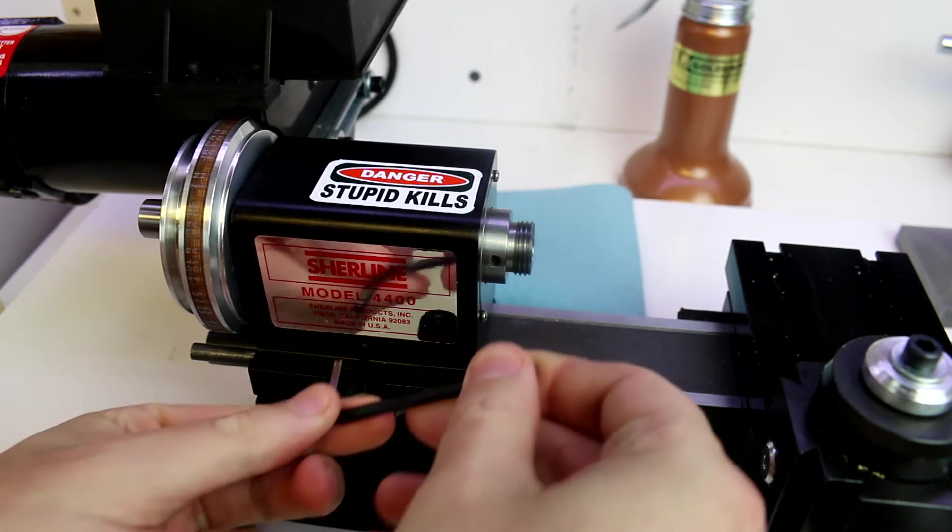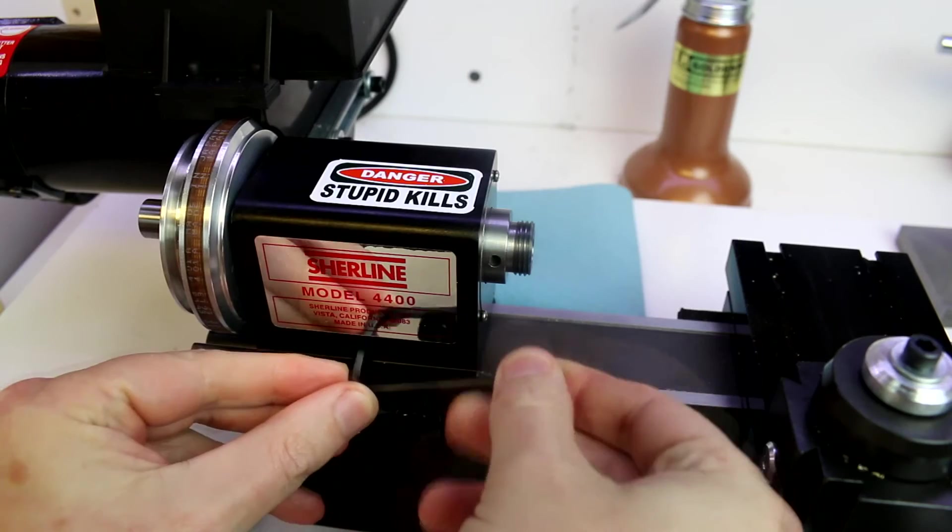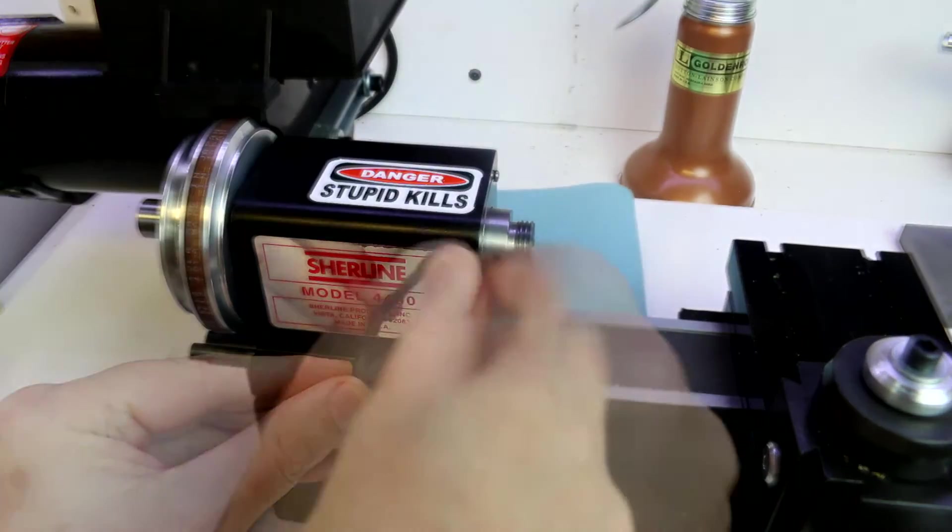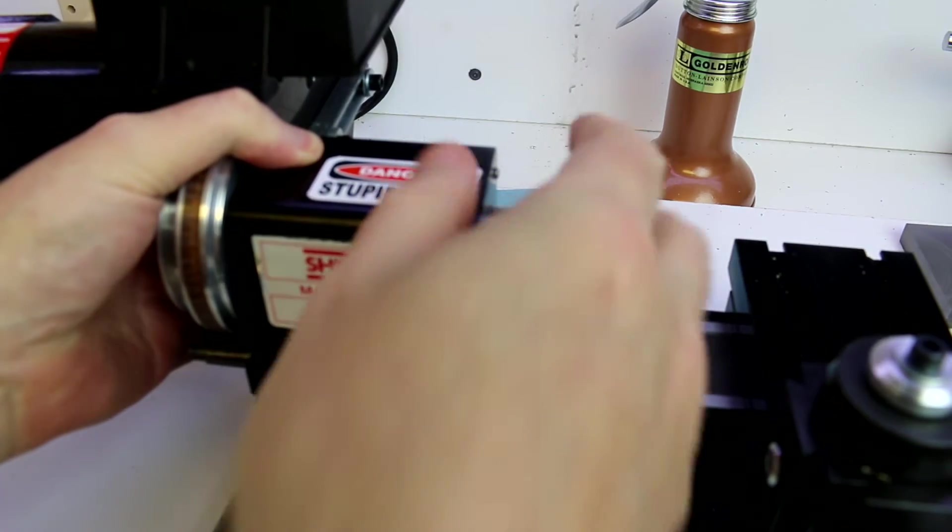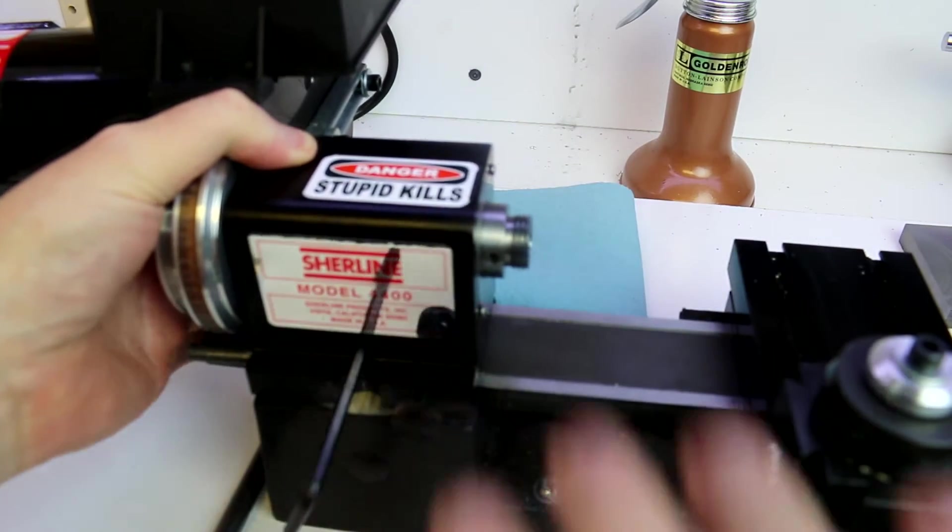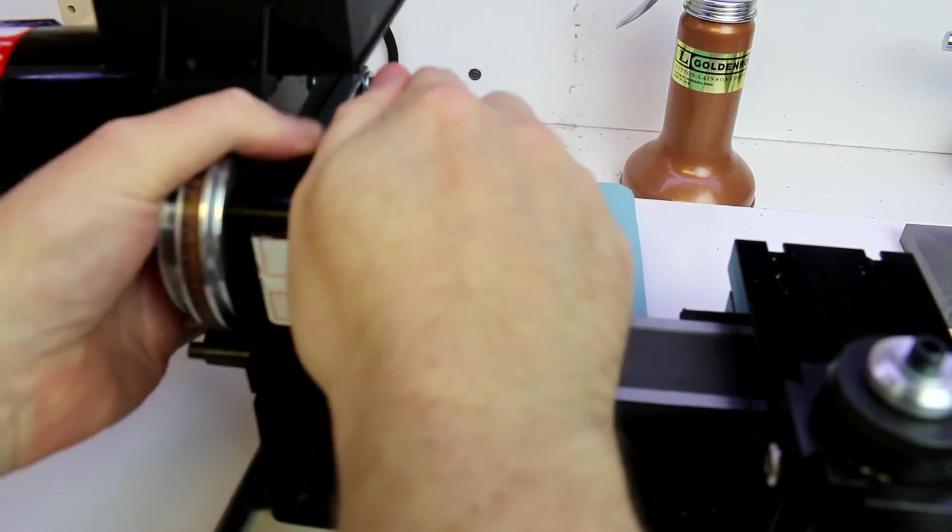In order to do this, we have to loosen the retaining screw for the head once I manage to get the Allen key in there. Now this is just a lock down screw and this is the first time I've removed the head. So I'm not exactly sure what we're going to find.